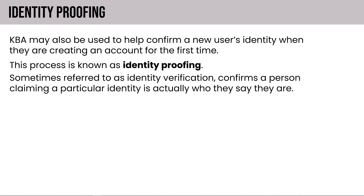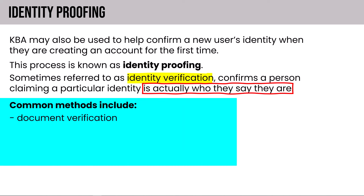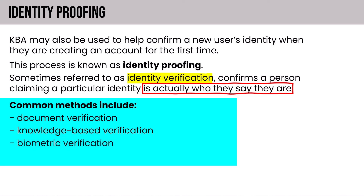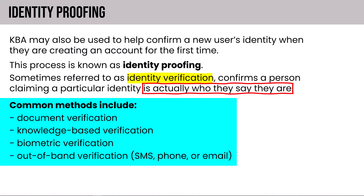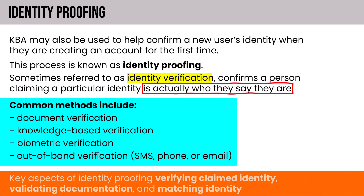Identity proofing — sometimes called identity verification — confirms that a person claiming a particular identity is actually who they say they are. Common methods include document verification, knowledge-based verification, biometric verification such as face or thumbprint, and out-of-band verification using SMS, phone call, or email. The goal is to validate documentation or proof and match that identity with 100% certainty.